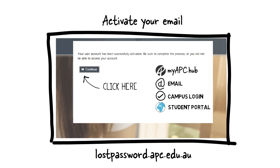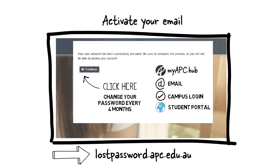For security reasons, you need to change your password every four months. You'll receive an email seven days before the password is due to expire. You will have to visit lostpassword.apc.edu.au to change your password.